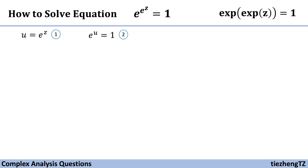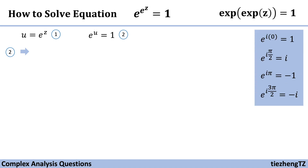Correspondingly, the second equation is e^u = 1. Since we have the parameter 1, we are going to start from equation number 2: e^u = 1. In our previous video we already introduced how to solve e^z = -2, and this is very similar — you can refer to that video for more information. So here we have e^u = 1.